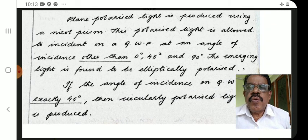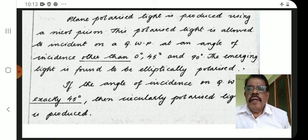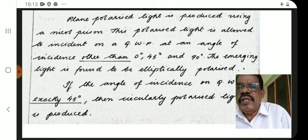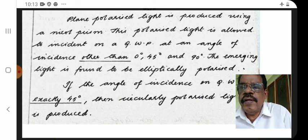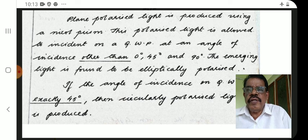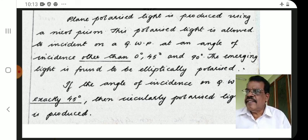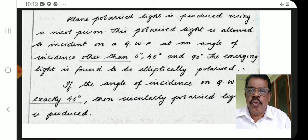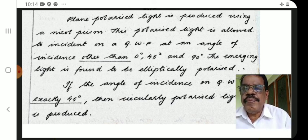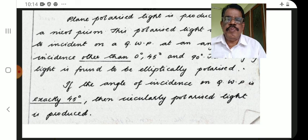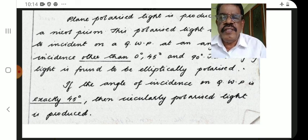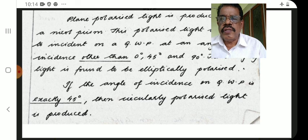Plane polarized light is produced using a Nicol prism. This polarized light is allowed to fall on a QWP at an angle other than 45 degrees — the emerging light is found to be elliptically polarized. If the angle of incidence on the QWP is exactly 45 degrees, then circularly polarized light is produced.